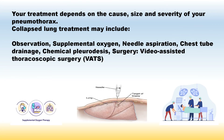Your treatment depends on the cause, size, and severity of your pneumothorax. Collapsed lung treatment may include observation, supplemental oxygen, needle aspiration, chest tube drainage, chemical pleurodesis, surgery, and video-assisted thoracoscopic surgery (VATS).